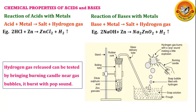Let us see with the help of this experiment how we can conclude that hydrogen gas is coming out in this reaction. We take a few pieces of zinc granules in a boiling tube and add about 5 ml of dilute sulfuric acid — we can also use hydrochloric acid. We observe the formation of gas bubbles; small gas bubbles are coming out.